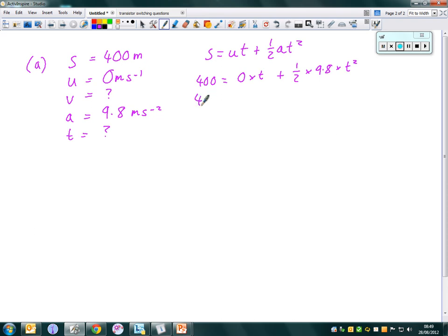So we get 400. Obviously this term goes to zero completely. A half times 9.8 is 4.9, so we get zero plus 4.9t squared.